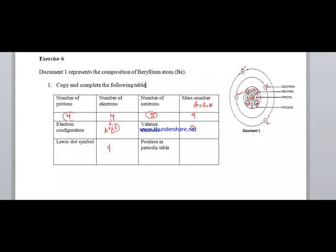Beryllium is Be. To write the Lewis dot symbol, we represent the number of valence electrons: 1 and 2 dots. For its position in the periodic table, we have 2 energy levels K and L, so it is in row 2. Since it has 2 valence electrons, the column will be column 2.